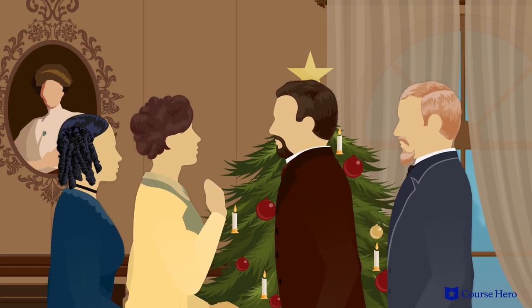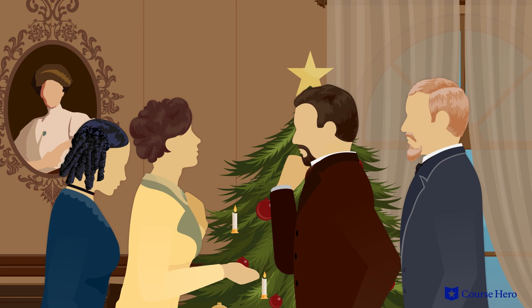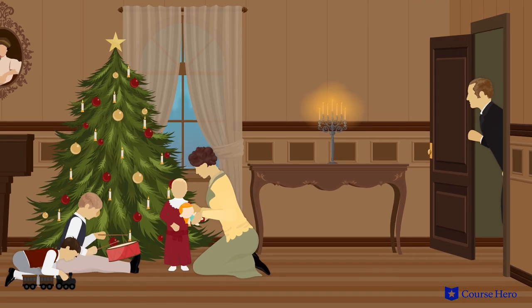Torvald meets Christine and says he's willing to give her a position at the bank where he's a manager. Krogstad slips back into the house. He thinks Torvald will replace him at the bank where he works with Christine, whom he has known from the past.